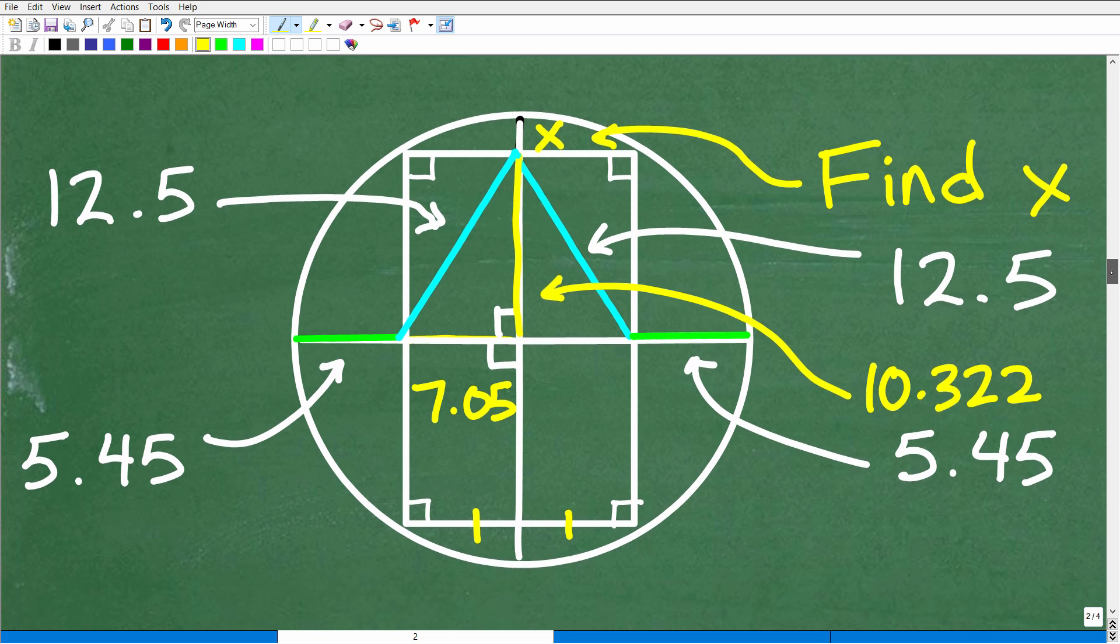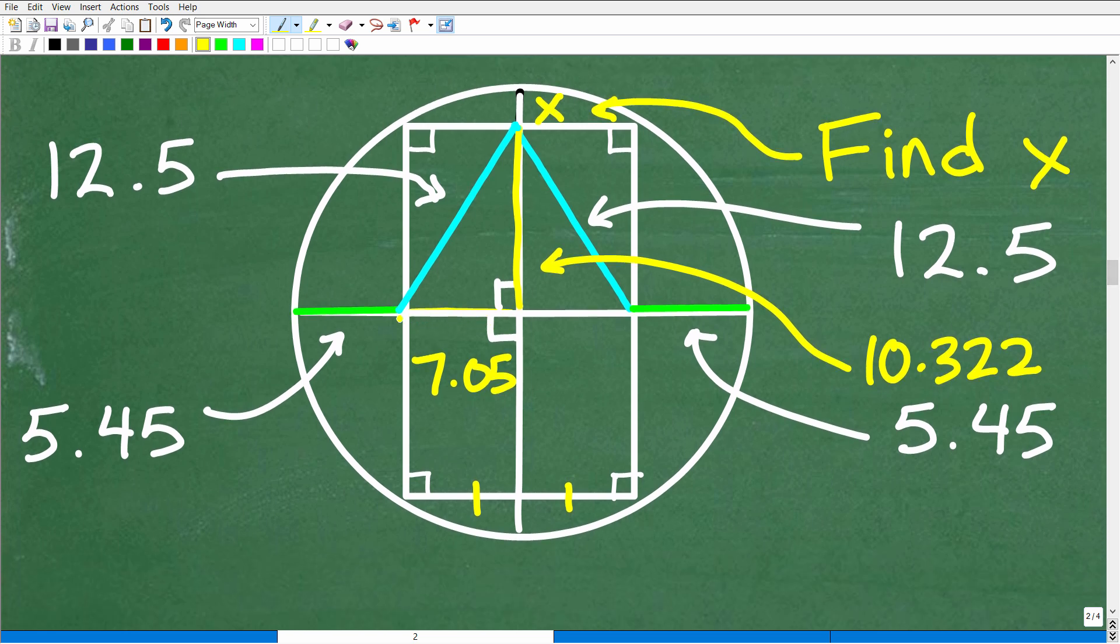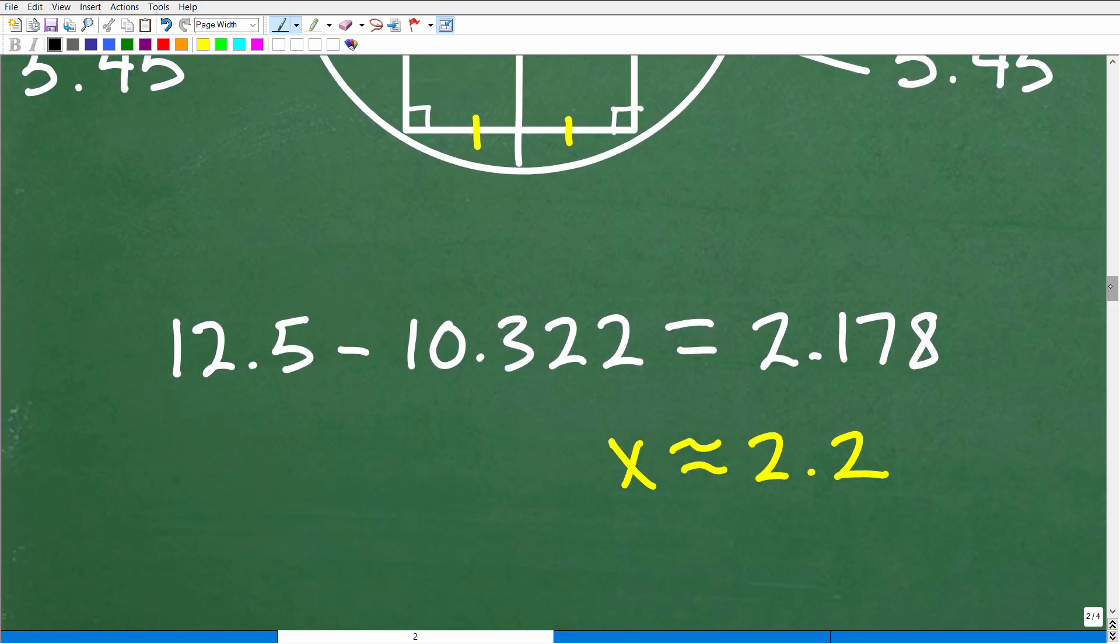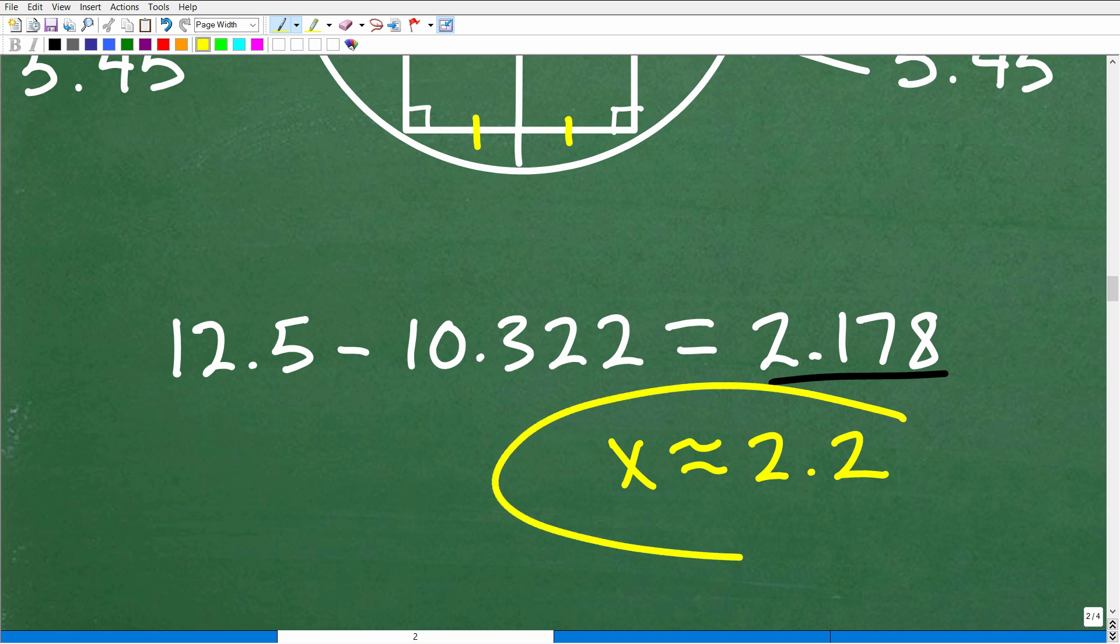And here we know this distance, 7.05. This is 5.45. We are looking for this distance right there. Now we know that this distance is 10.322. So I have this distance. I also have the radius, which is 12.5. So if I find the difference between those two, I will get this little distance X, which I'm looking for. So let's do that right now. 12.5 minus 10.322 will give us a decimal of 2.178. But I'll just round that up to 2.2.